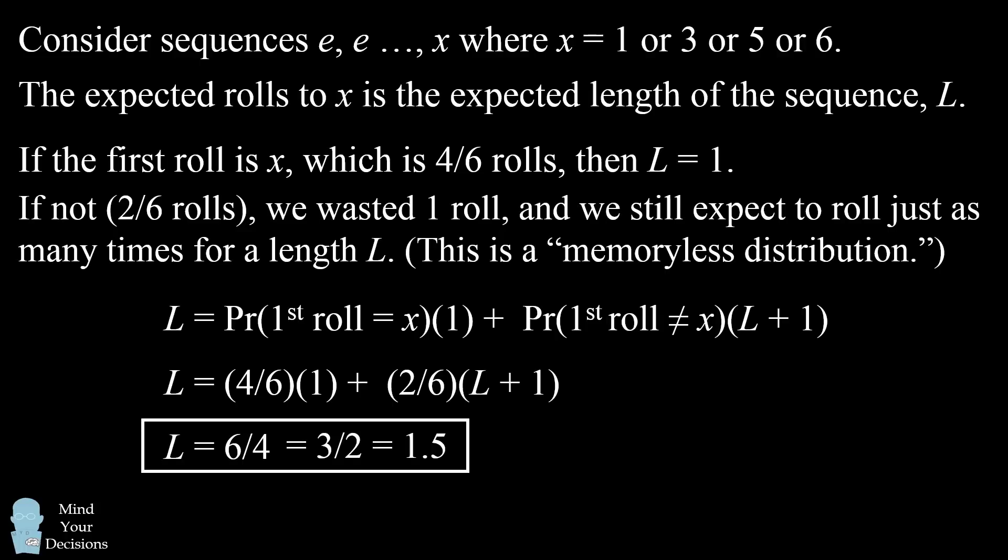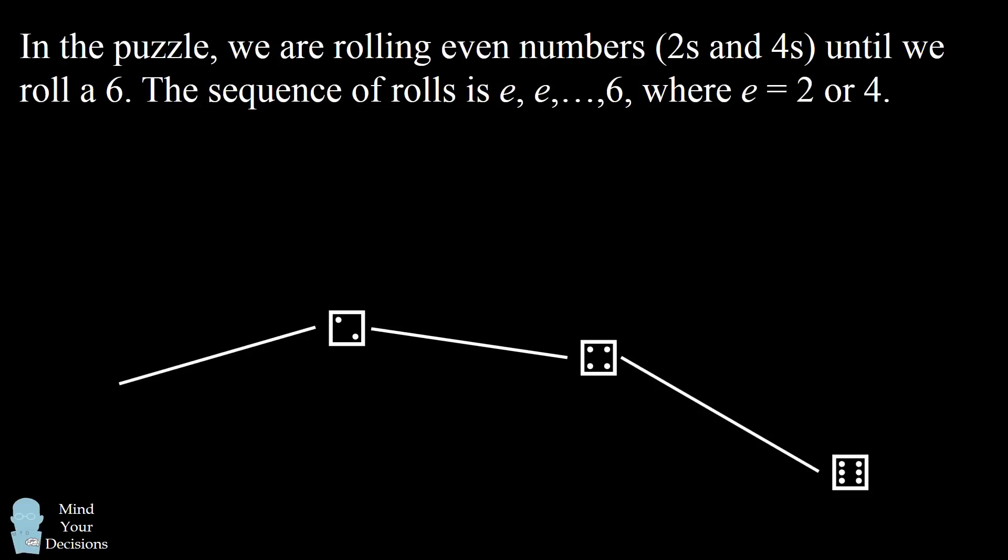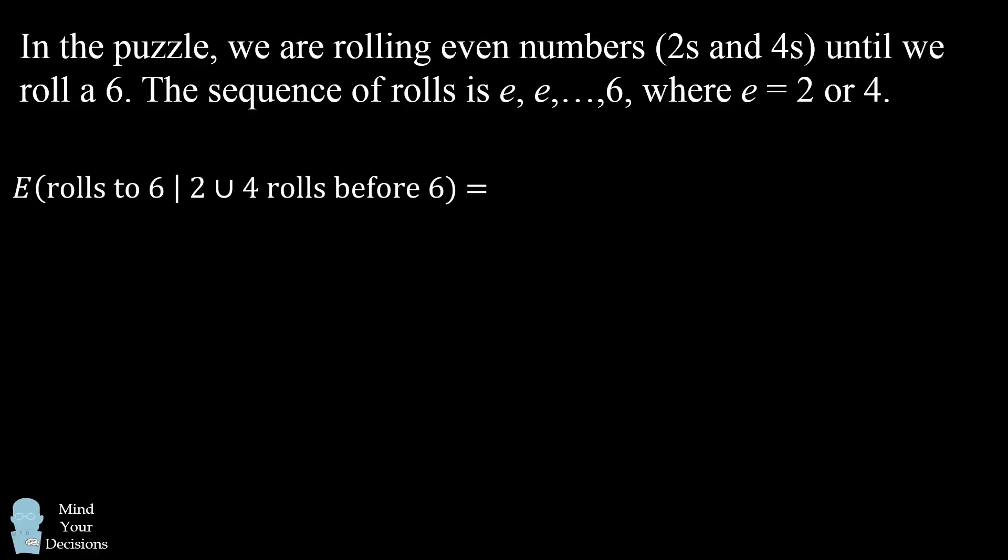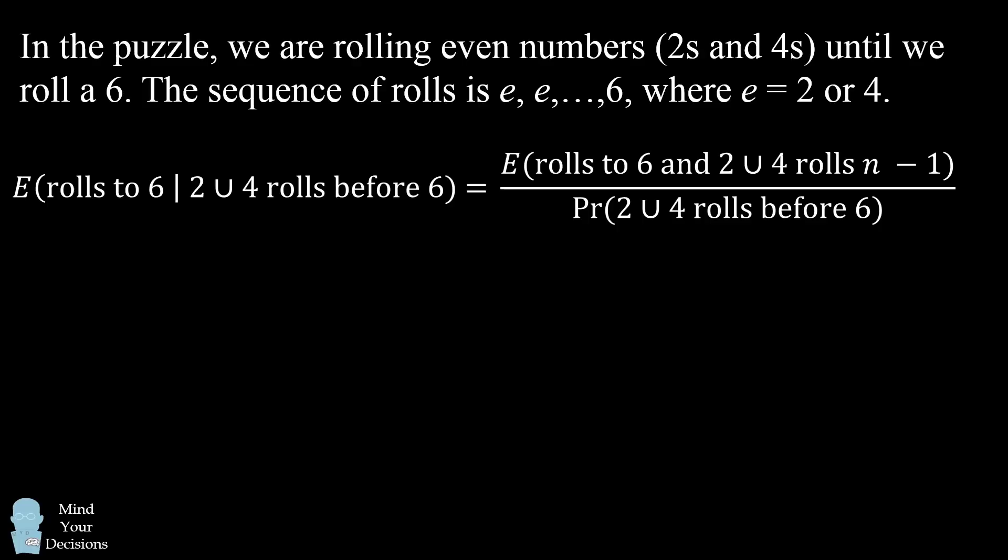So if this explanation wasn't satisfactory to you, I'm going to provide another way that you can get the answer. We can directly calculate the expectation using the definition of a conditional expectation. So let's calculate the expected number of rolls until a 6 given that there are only rolls of 2 and 4 before we roll to the 6. In this problem, we can write the conditional expectation as follows: we have the expected rolls to 6, and we have only 2 or 4 rolls for the n-1 rolls until we get the 6, and we're going to divide this by the entire event where we only have 2 or 4 rolls until we get a 6 in some roll, either the first roll, the second roll, the third roll, and so on.